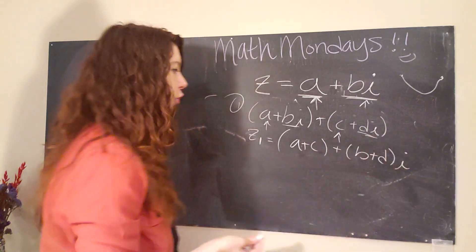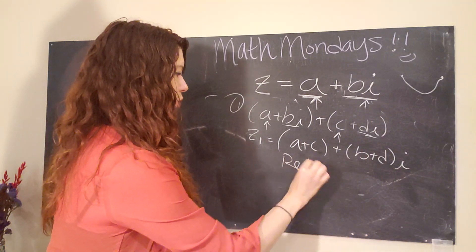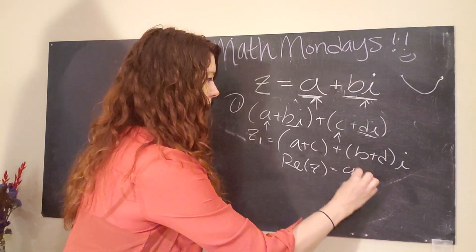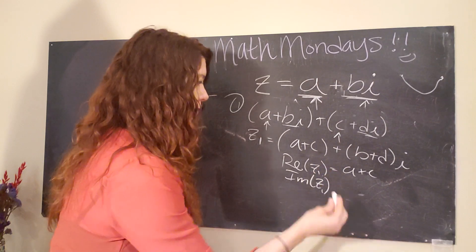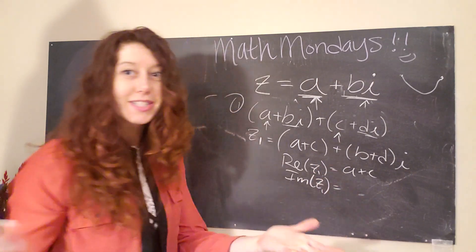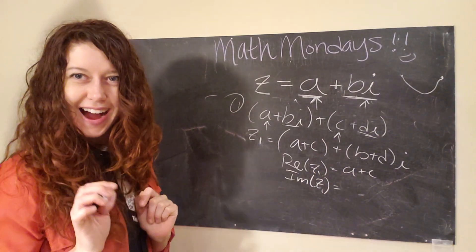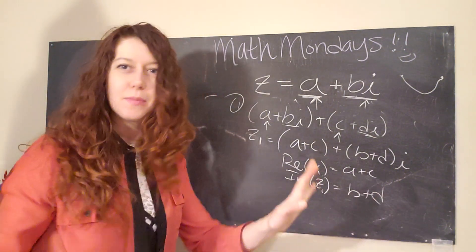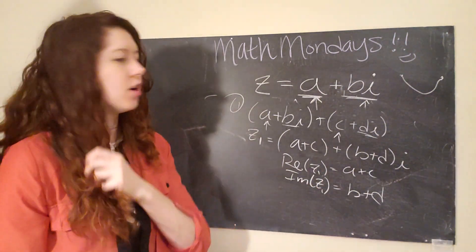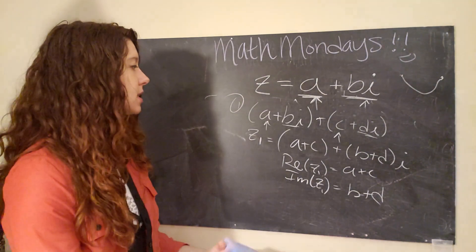So then if we were to ask what's the real part of Z one, you would say a plus c. And if we ask what is the imaginary part of Z one, we would say, what do you think? Yeah, b plus d. Not so bad. All right. So that is addition.